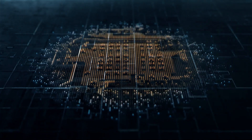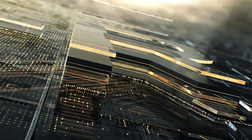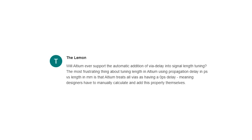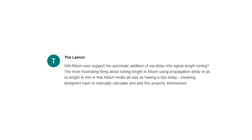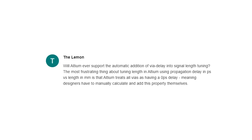We talked about this in our most recent Q&A video, but I wanted to do a longer video to discuss how you could actually calculate this, because this has come up more than once in the comments on the Altium YouTube channel. TheLemon writes: will Altium ever support the automatic addition of via delay into signal length tuning? You're right — you do have to manually enter it.